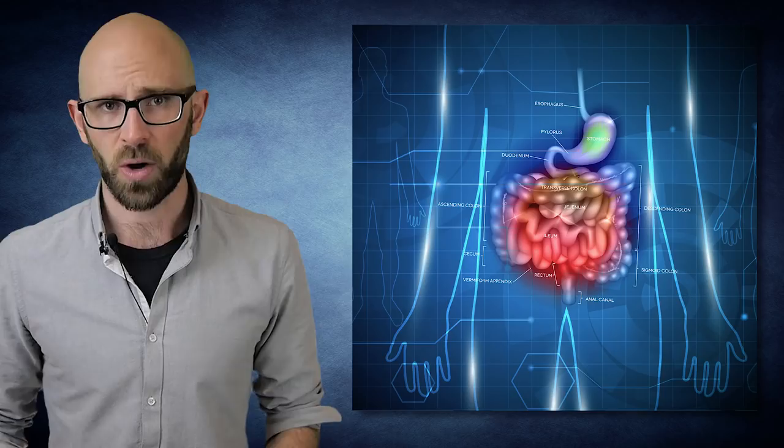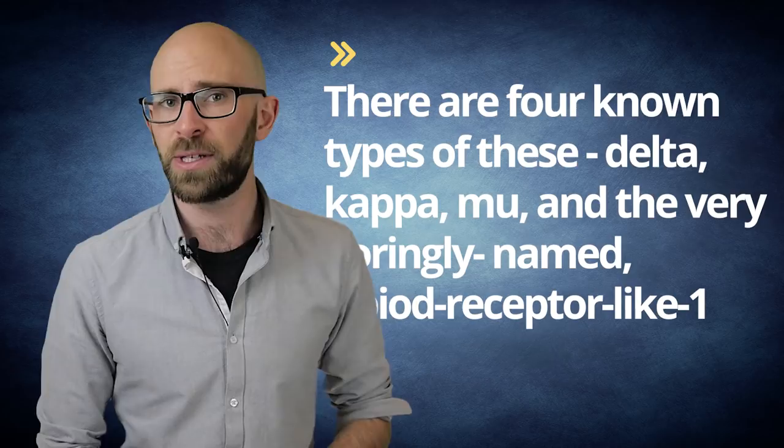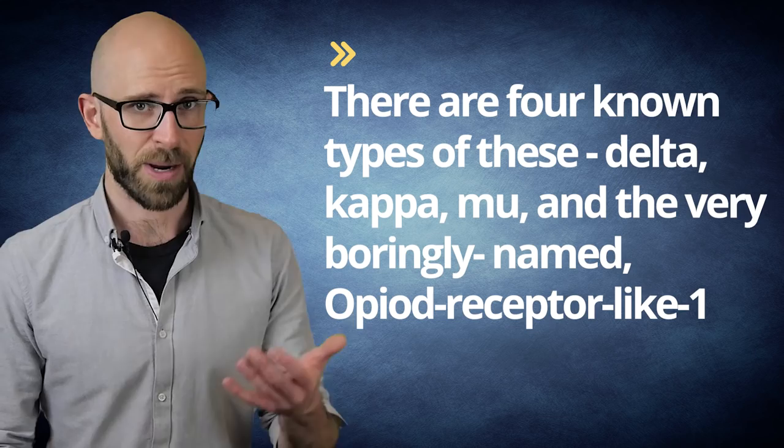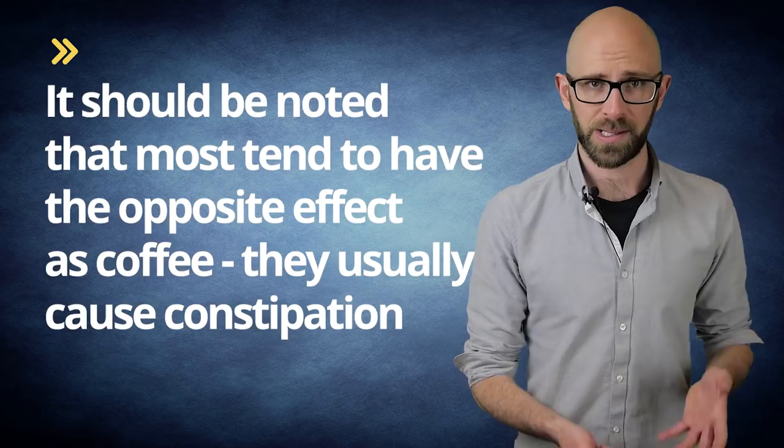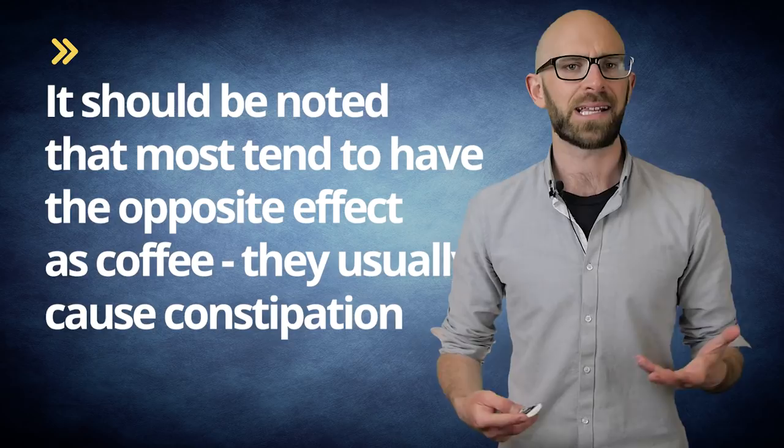For instance, the morphine-like compounds found in coffee called exorphins attach to opiate receptors located throughout your body. There are four known types of these: delta, kappa, mu, and the very boringly named Opiate Receptor Like One. All of these receptors are known to affect peristalsis in some way. However, it should be noted that most of these tend to have the opposite effect as coffee. They usually actually cause constipation. So why is this being considered as a contributor?